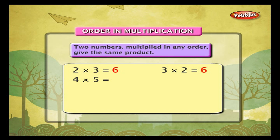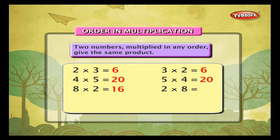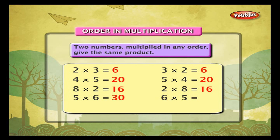In the same way, 4 into 5 is equal to 20 and 5 into 4 is also equal to 20. 8 into 2 is equal to 16, and 2 into 8 is also equal to 16. 5 into 6 is equal to 30, and 6 into 5 is also equal to 30. 3 into 7 is equal to 21, and 7 into 3 is also equal to 21.